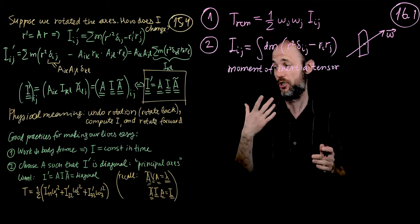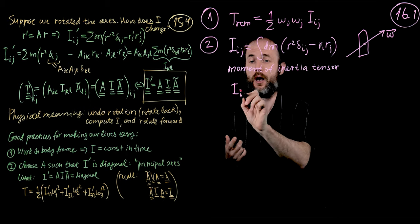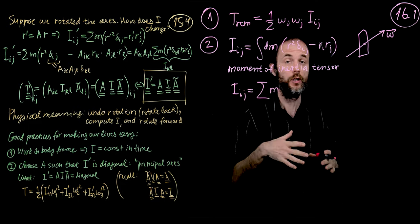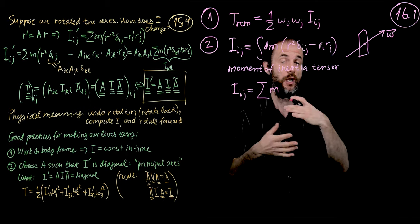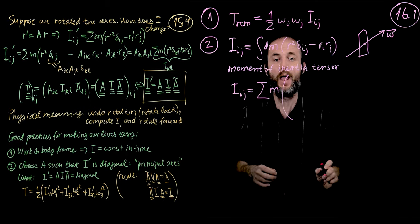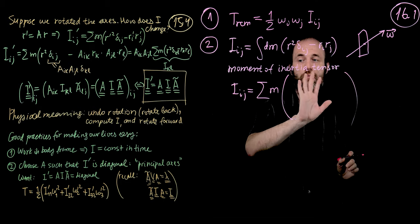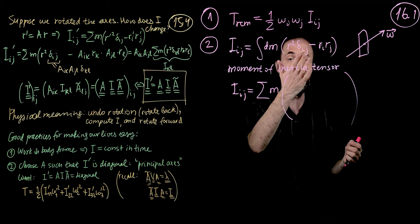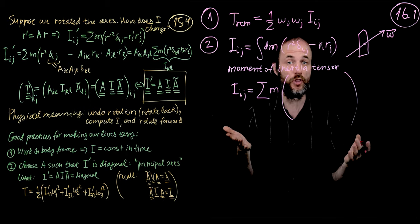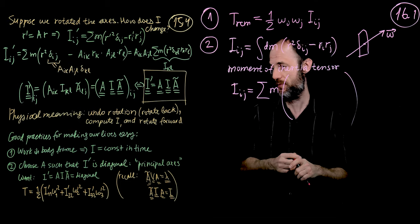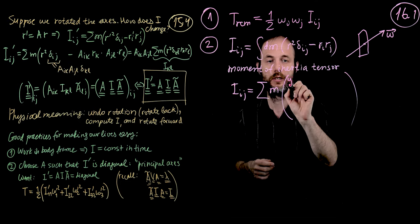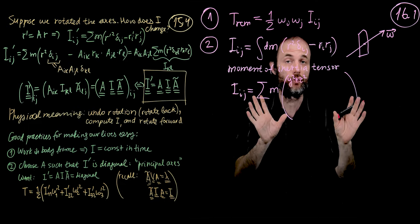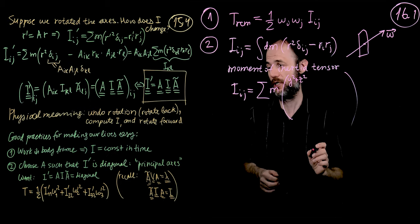Specifically in Cartesian coordinates, we can write I_ij in matrix form as a sum over all the different pieces of the body, or different masses if we're considering a bunch of point masses. This mass is multiplied by a matrix — in three dimensions, i and j can go between one and three inclusive — so it's a three-by-three matrix. The I_xx component is y squared plus z squared.